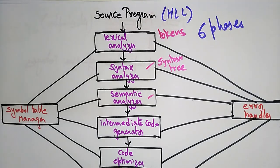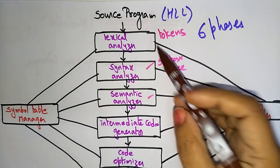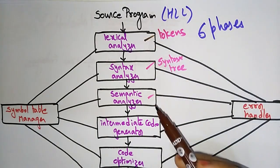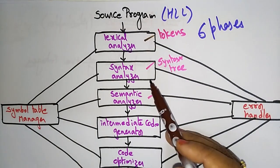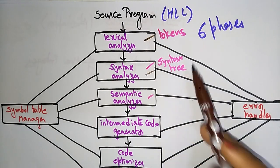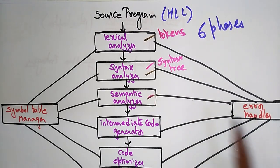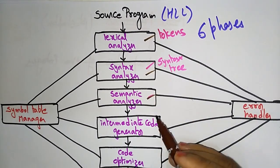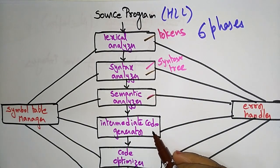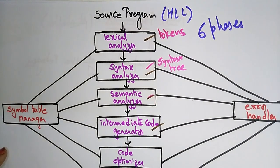Let's continue with the phases of a compiler. So far we have discussed phase 1 lexical analyzer, phase 2 syntax analyzer, and phase 3 semantic analyzer. Now let's see phase 4: the intermediate code generator.